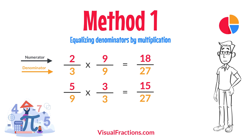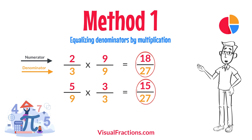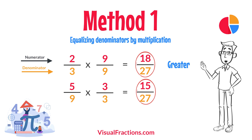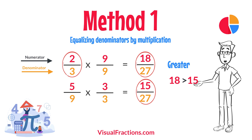Now, with both fractions expressed with a denominator of 27, we can easily compare them. Comparing these, 18/27 is greater than 15/27, so two-thirds is the larger fraction.